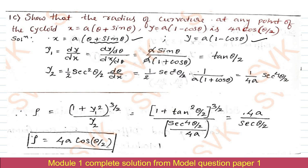For dx/dθ: derivative of θ is 1 and derivative of sinθ is cosθ, so dx/dθ = a(1 + cosθ). Applying half-angle identities: sinθ = 2sin(θ/2)cos(θ/2) and 1 + cosθ = 2cos²(θ/2). The 2cos(θ/2) cancels, leaving sin(θ/2)/cos(θ/2) = tan(θ/2). Therefore y₁ = dy/dx = tan(θ/2).